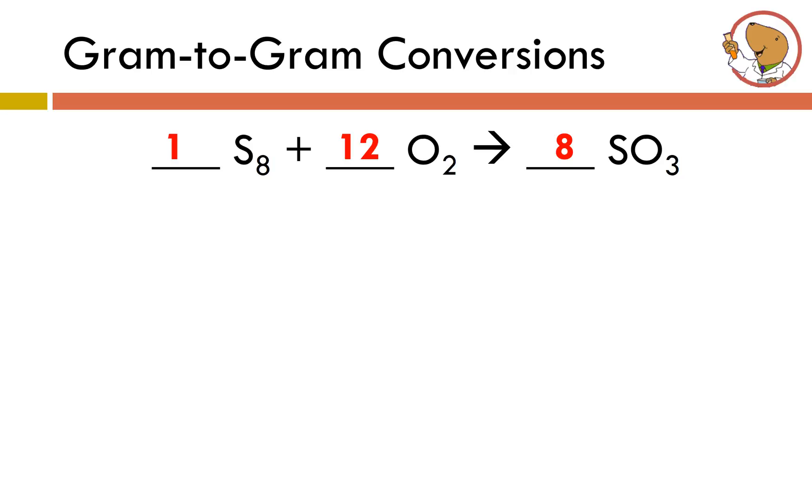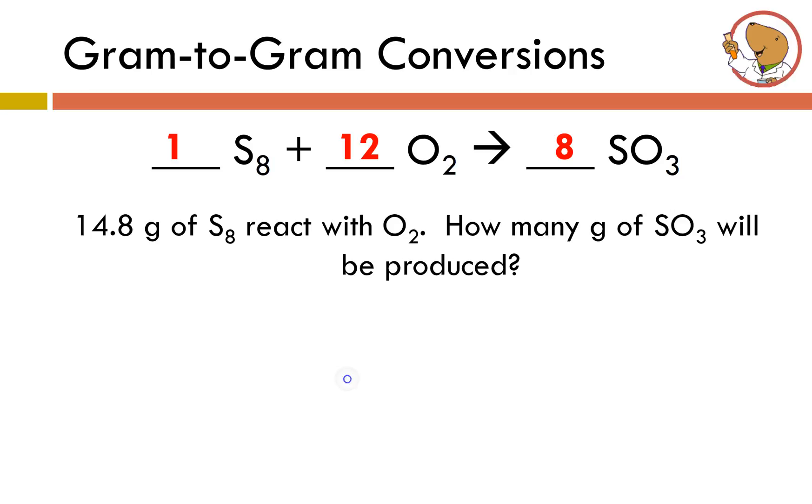Let's talk about the most complicated stoichiometric conversion I can ask you to do. You can do what's called a gram-to-gram conversion. Let's say I've got 14.8 grams of S8 reacting with O2. And we'll assume that's in excess, meaning there's plenty of oxygen around to ensure that all of the sulfur is converted into sulfur trioxide. The question is asking how many grams of sulfur trioxide will be produced? We've got a whole bunch of conversions to do. We're starting off with grams of S8 and ultimately, we want to get into grams of SO3. Now, we can't really compare grams to grams because S8 and SO3 have very different molar masses. Instead of using grams, a better unit to use would be moles.